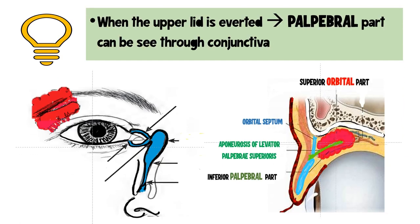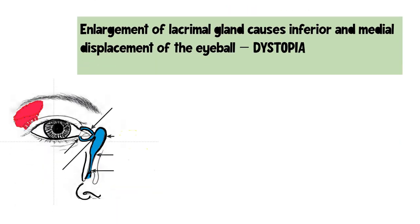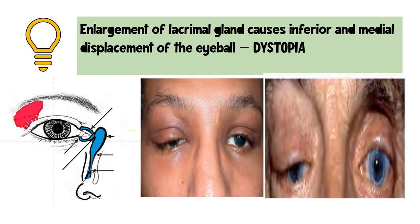Whenever the upper lid is averted, we will see the lobe which is closer to the lid — that is the palpebral part. So whenever you avert the upper lid, you are actually looking at the palpebral part of the gland through the conjunctiva. Whenever there is enlargement of the lacrimal gland, because it is situated in the superior temporal quadrant, it will cause an inferior and medial displacement of the eyeball — called inferomedial dystopia.